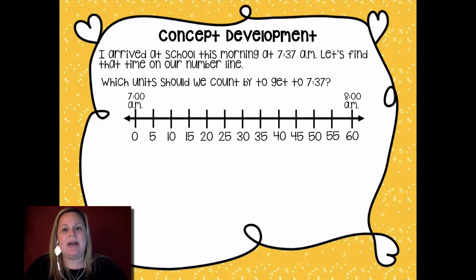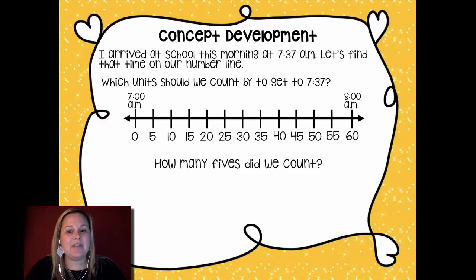So which unit should we count by to get to 7:37? Yeah, we have to count by fives, right? Because we need to get to that 30 something, right? So we're going to count by fives. And then we also have to count by ones because it's not on one of those nice even numbers that end in a zero or a five. It ends in a seven. So that's telling me I'm going to have to count by some ones. So how many fives are we going to count by to get to 37? So when I stop there, I counted seven fives.